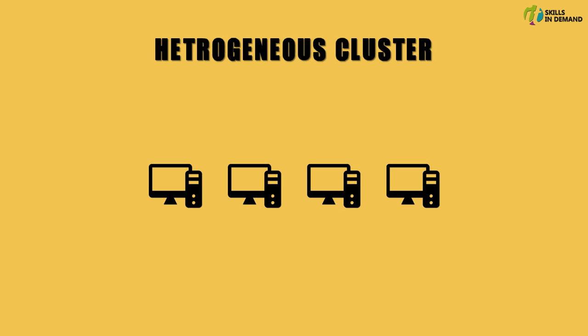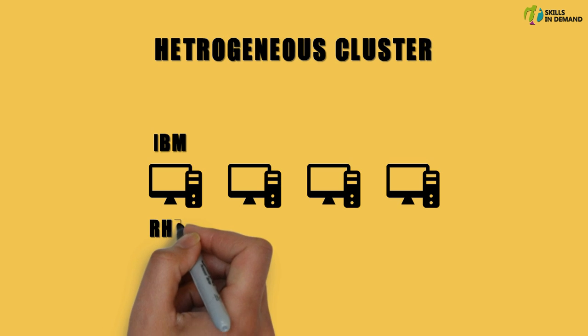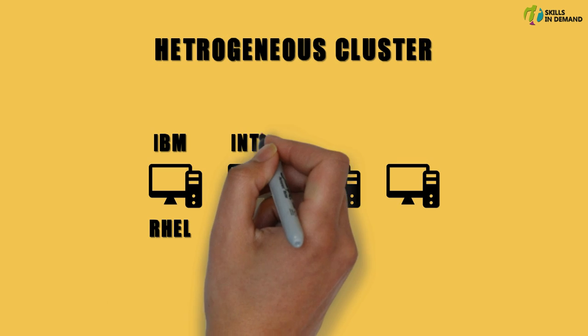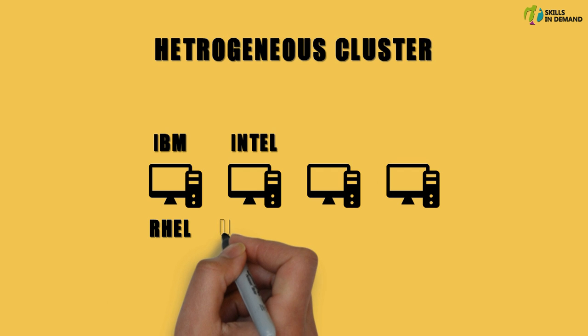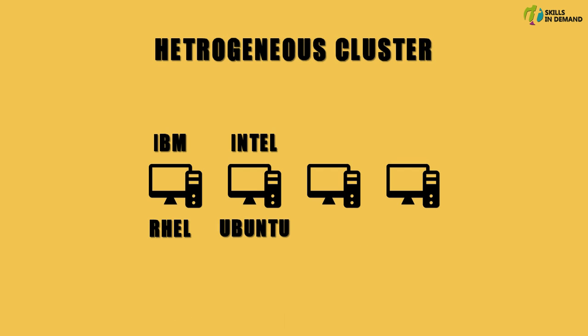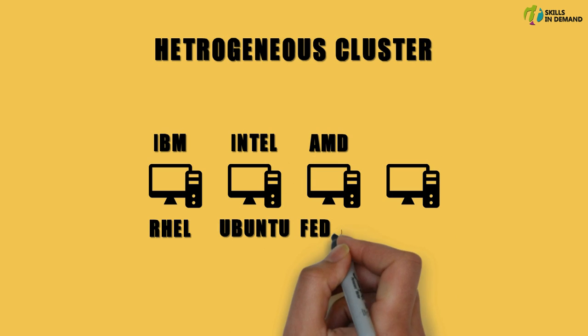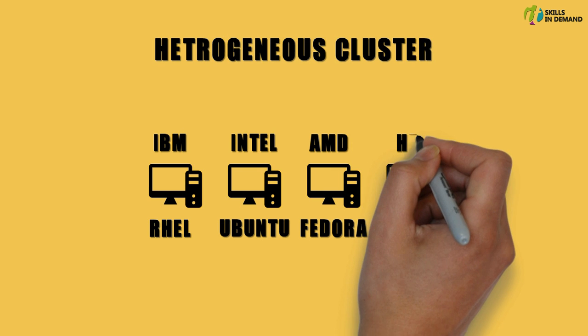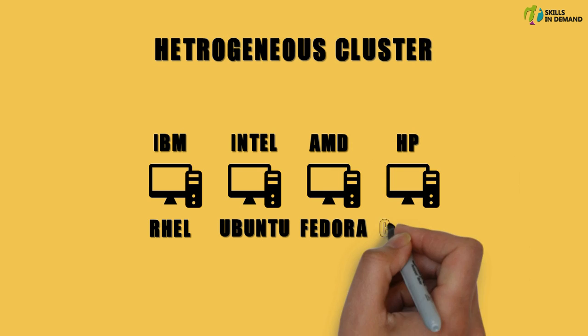For instance, consider a cluster made up of four nodes: the first node is an IBM machine running Red Hat Enterprise Linux, the second node is an Intel machine running Ubuntu Linux, the third node is an AMD machine running Fedora Linux, and the last node is an HP machine running CentOS Linux.